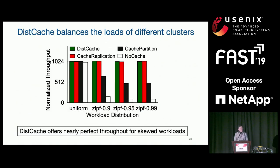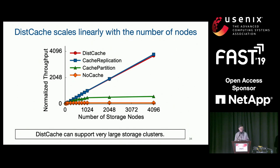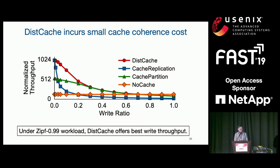Looking at more detailed figures: with different workload distributions on the X-axis — uniform and power-law distributions like Zipfian with different parameters — larger parameters mean more skewed distributions. Disk cache offers nearly perfect throughput for skewed workloads, working as well as replication. And scaling to more nodes and more clusters, disk cache also works as well as replication. For write queries under very skewed workloads (Zipfian 0.99), disk cache outperforms existing baselines when write ratio is less than 30%, and works as well as partition for larger write ratios.